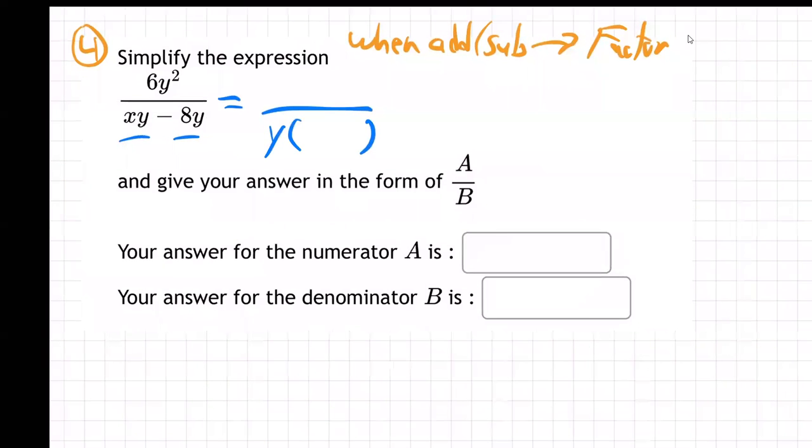What's in common there is a y, right? They both have a y. So take out what's in common. And then what does that leave on the inside? y times x and y times minus 8. What's the top? 6y squared.